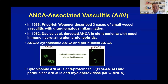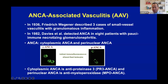So later on, ANCA by indirect immunofluorescent staining on ethanol-fixed leukocytes has two patterns. One is the cytoplasmic pattern, shown here, and the other one is the perinuclear ANCA. So the cytoplasmic ANCA is the anti-proteinase-3 or PR3 ANCA, and the perinuclear ANCA is the anti-myeloperoxidase MPO ANCA.